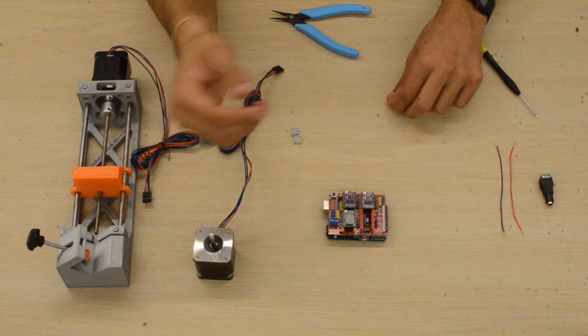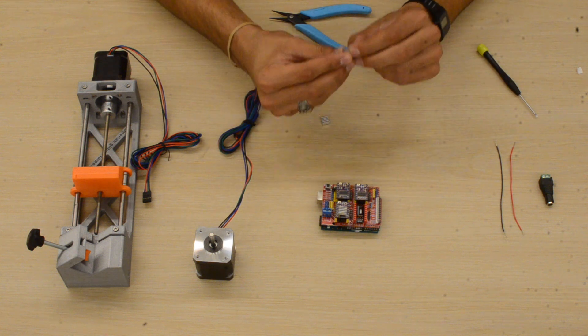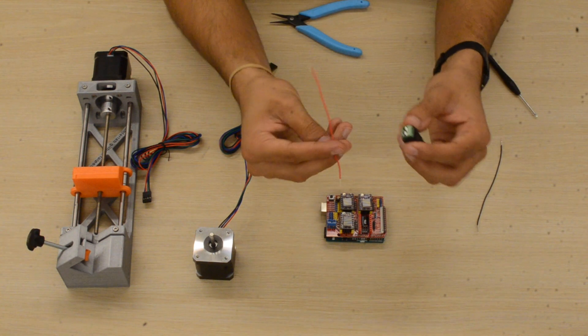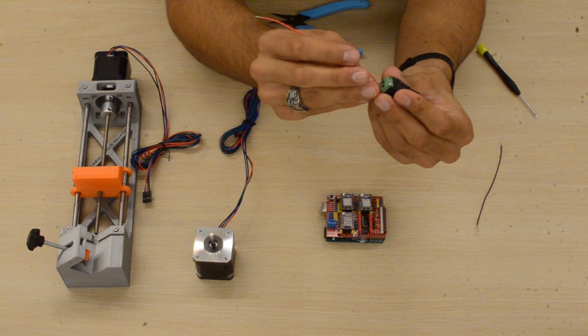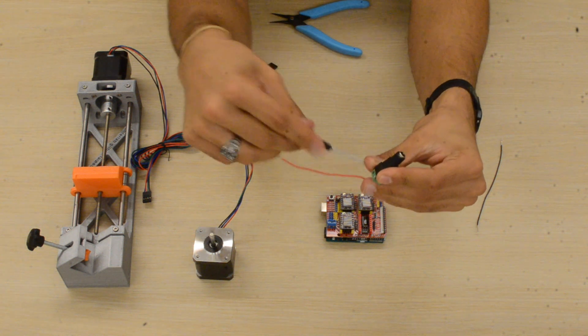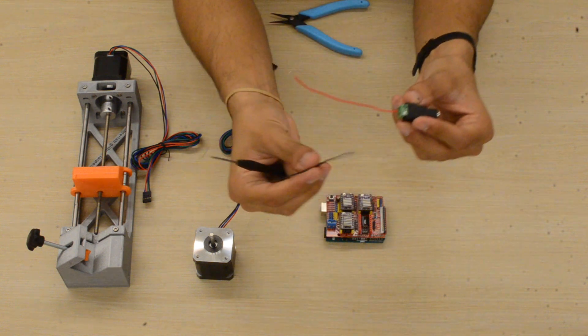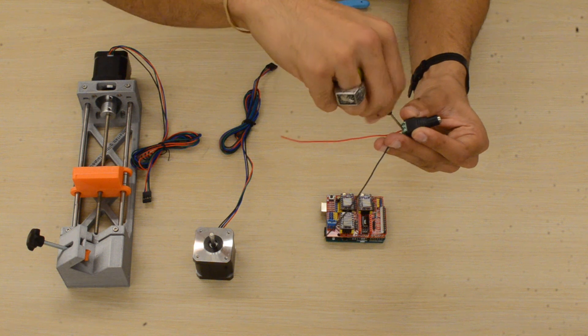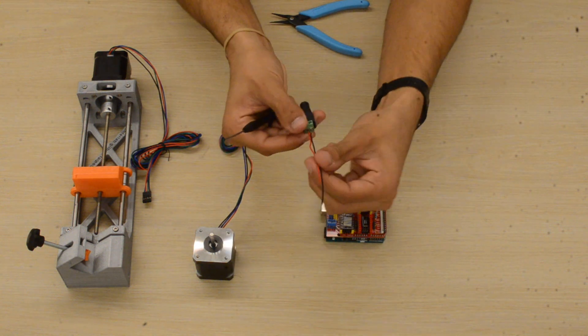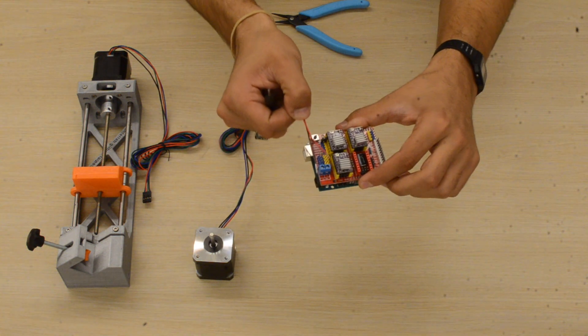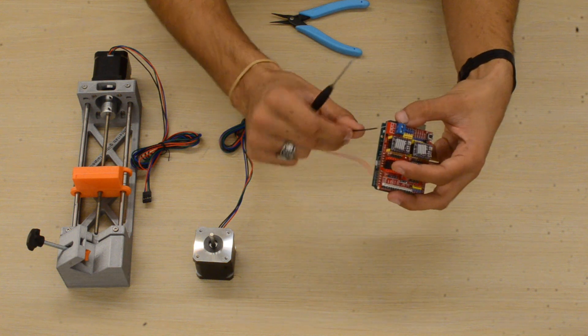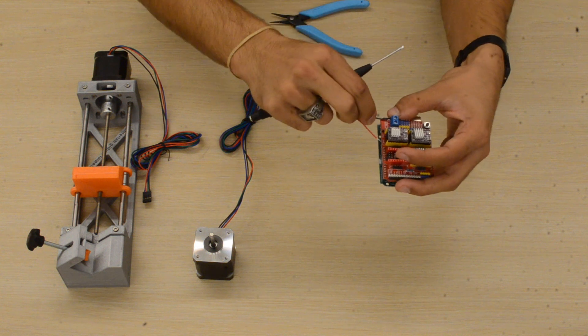Once that's done, grab the power connector and plug the red wire into the plus side of the power connector. Stick it in and tighten down the screw—I'm using a flathead screwdriver to clamp down on the wire. Do the same for the minus side. Then plug those wires into the associated plus and minus sides on the CNC shield: red goes into plus, black goes into minus. Stick it in and tighten it down.